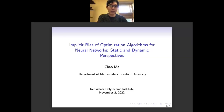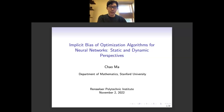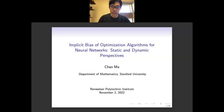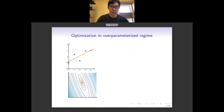I'll discuss my recent works regarding the implicit bias of optimization algorithms for neural networks. We'll take two different perspectives, static and dynamic perspectives, to answer different questions.